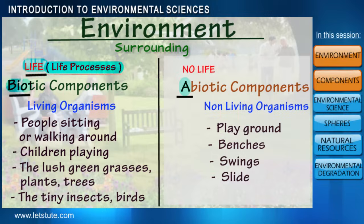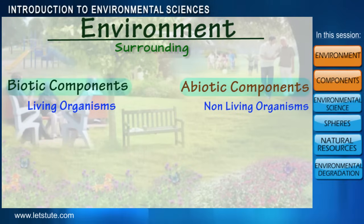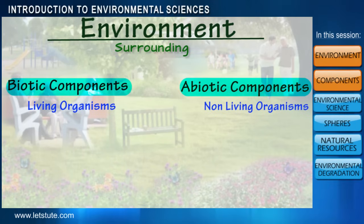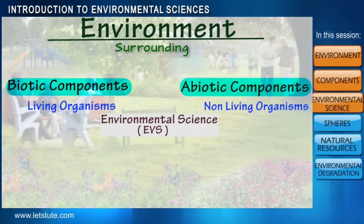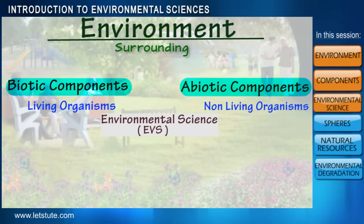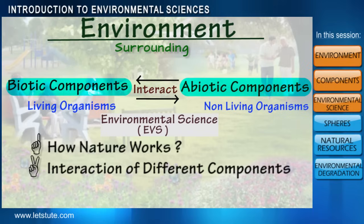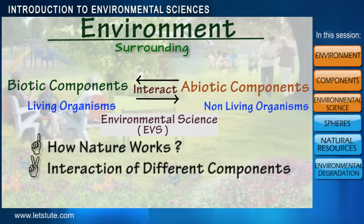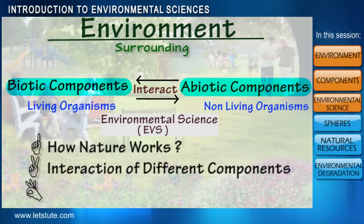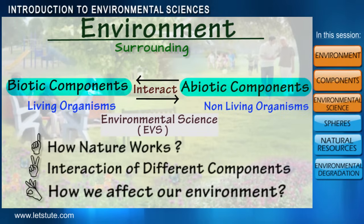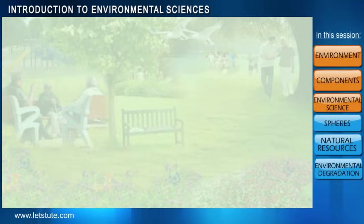Since we now know what environment consists of, we can easily define what environmental science is. Learning about environmental science means understanding how nature works, understanding the various interactions of different components of our environment, and also finding out how we humans affect our environment.